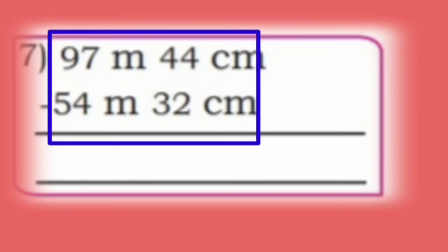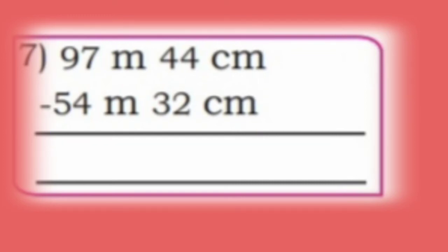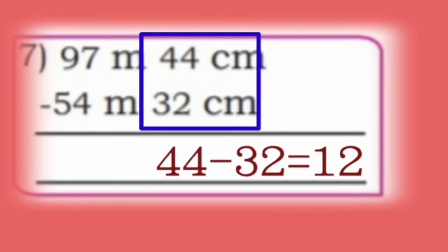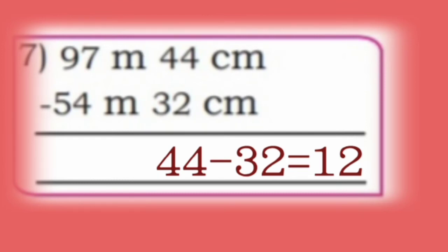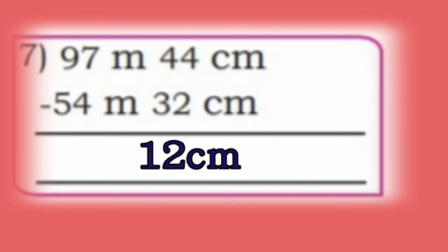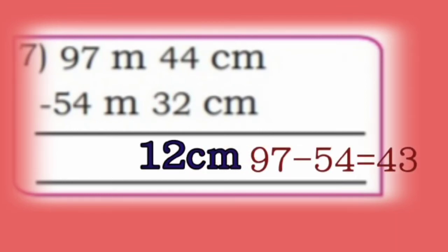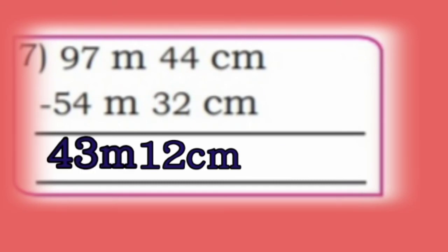Let us solve seventh one: 97 meter 44 cm minus 54 meter 32 cm. First subtract centimeters: 44 minus 32 is 12. Next subtract meters: 97 minus 54 is 43 meter. So the answer is 43 meter 12 cm.